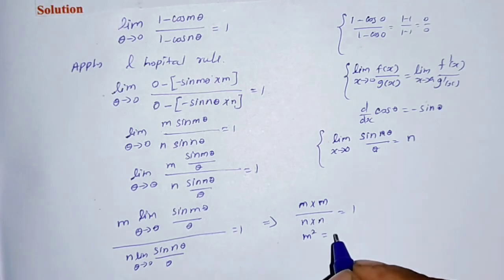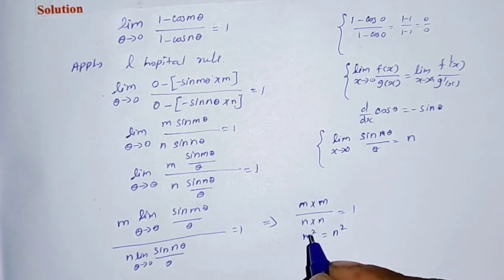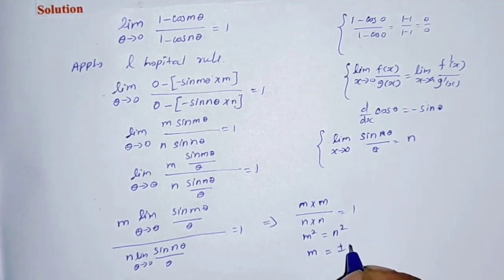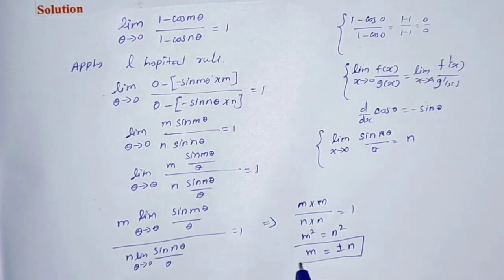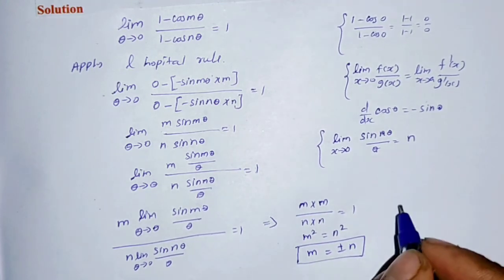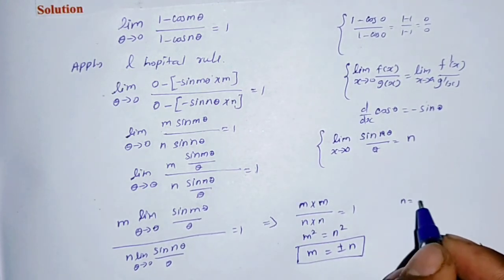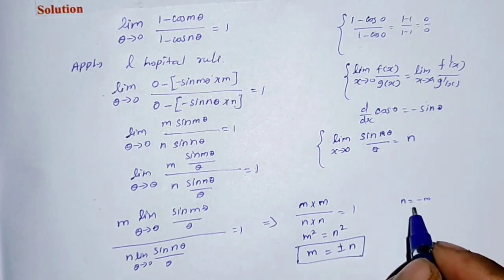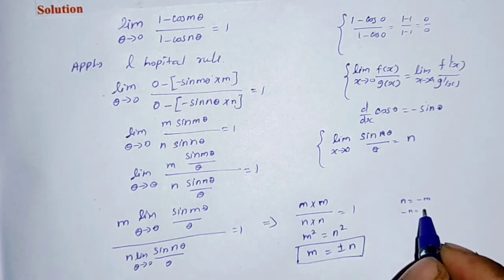Therefore m squared equals n squared, which means m equals plus or minus n. This completes the proof.